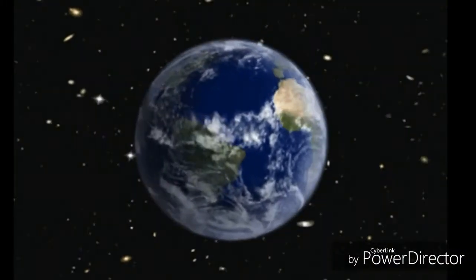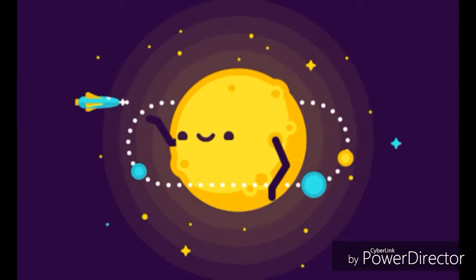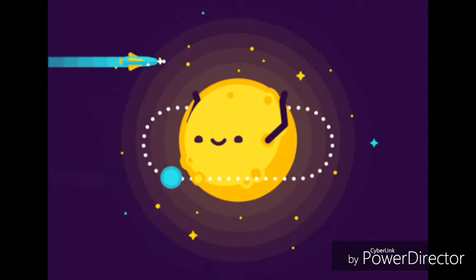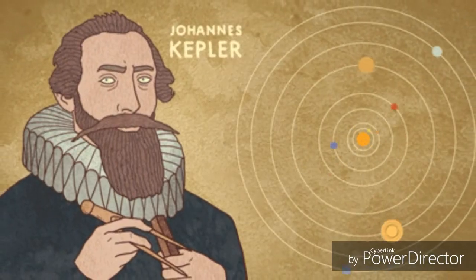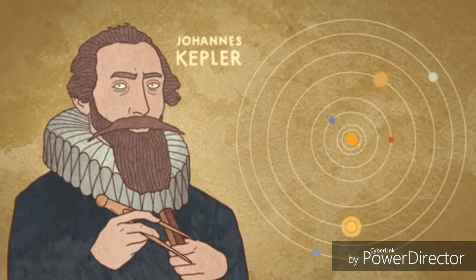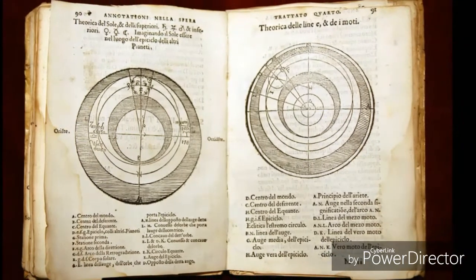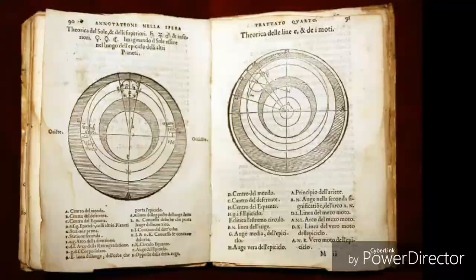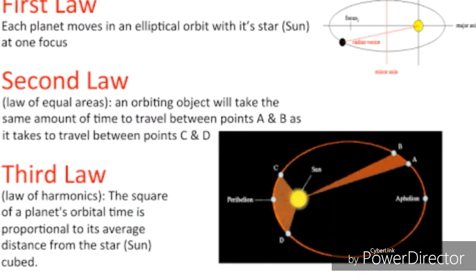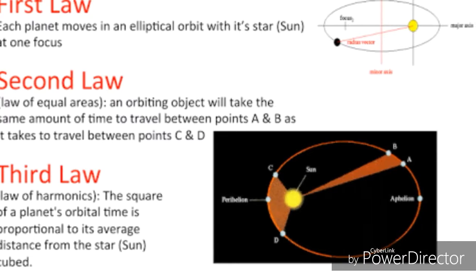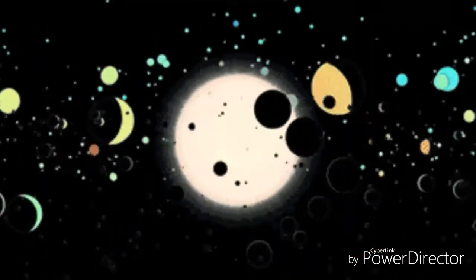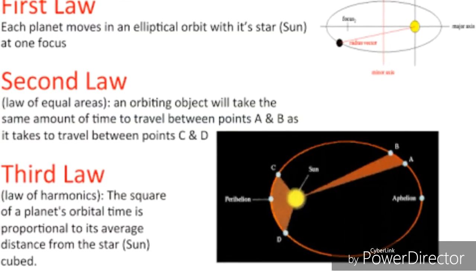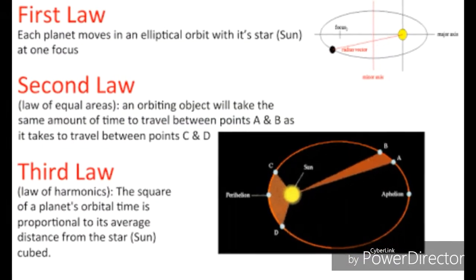A planet is an astronomical spherical object orbiting a star that is massive enough to be rounded by its own gravity. In the early 1600s, Johannes Kepler proposed three laws of planetary motion. Kepler was able to summarize the carefully collected data of his mentor Tycho Brahe with three statements that describe the motion of planets in a sun-centered solar system.